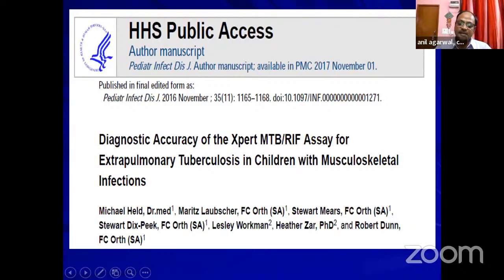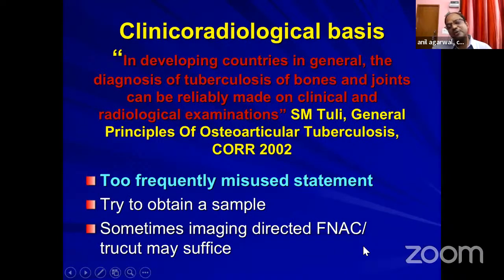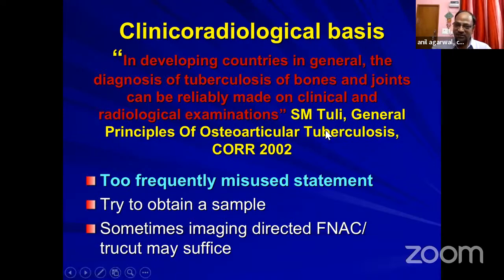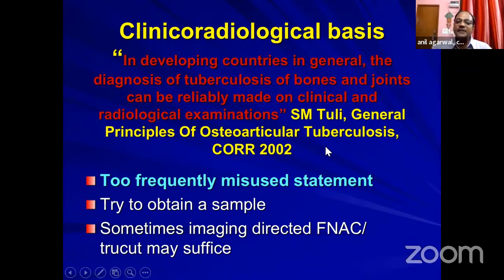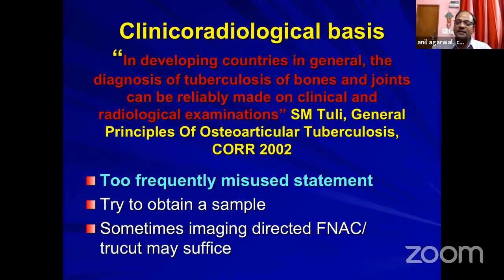Regarding the Gene Xpert, which is coming in a big way for tuberculosis — studies show a specificity of nearly 100% and a high sensitivity rate. One common practice in our country is starting TB treatment just on the basis of radiology and clinical examination, citing Professor Tuli's book — that in developing countries diagnosis can be reliably made on clinical and radiological examination. However, given the many conditions that can mimic tuberculosis, I do not feel this statement is entirely true. Try to obtain a sample whenever possible.